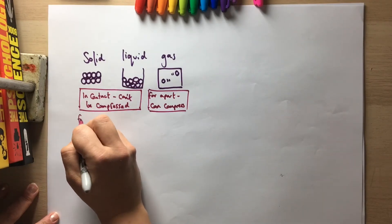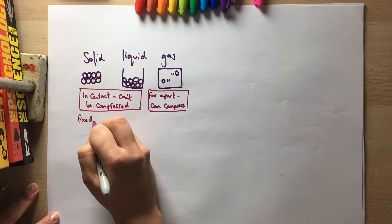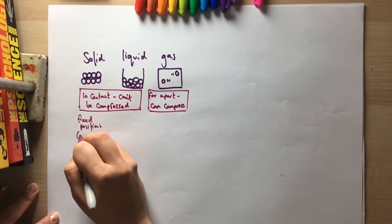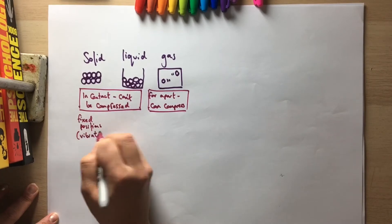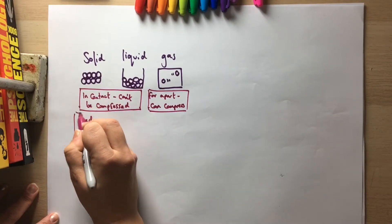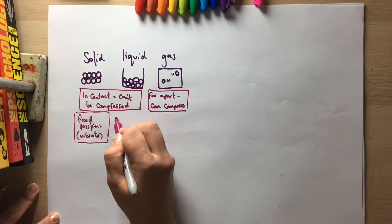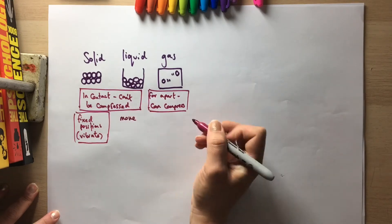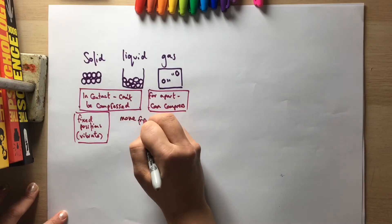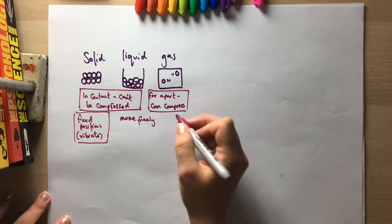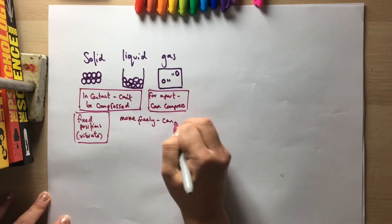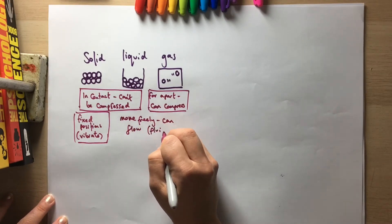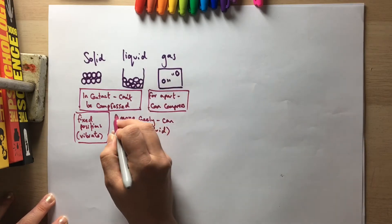In a solid, the particles are in fixed positions and they vibrate around those fixed positions. Whereas for a liquid and a gas, they can move pretty freely — we say they flow, and this is what we call a fluid: a liquid or a gas, something that can flow.